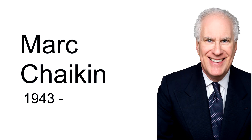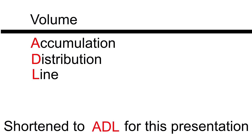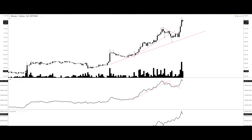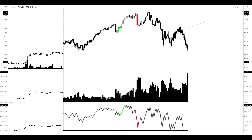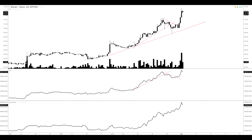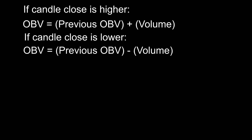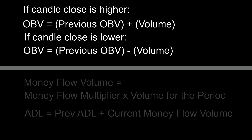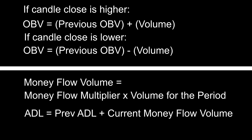Mark Chaikin developed the accumulation distribution line, also known as the volume accumulation distribution line. Similar to the OBV, they both use accumulation of the volume to detect divergences between the volume and the price. Where the ADL differs is that it uses a function known as the money flow multiplier to calculate the relationship of the closing price to the high and low of the candle.